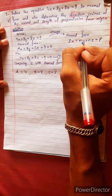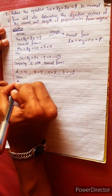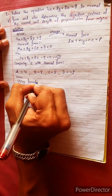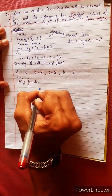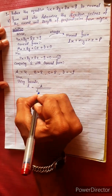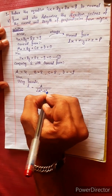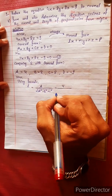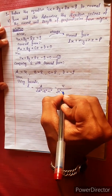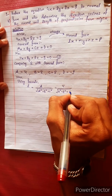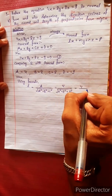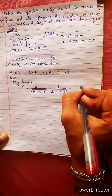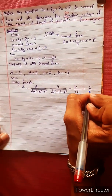Now using the formula for direction cosines: l = a divided by √(a² + b² + c²). So l = 4 divided by √(4² + 8² + 8²) = 4 divided by √(16 + 64 + 64) = 4/12 = 1/3.